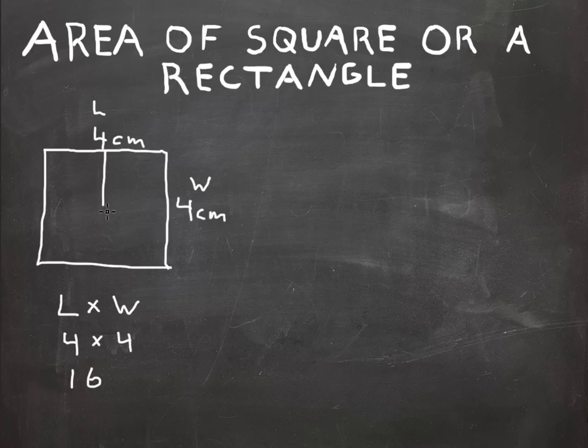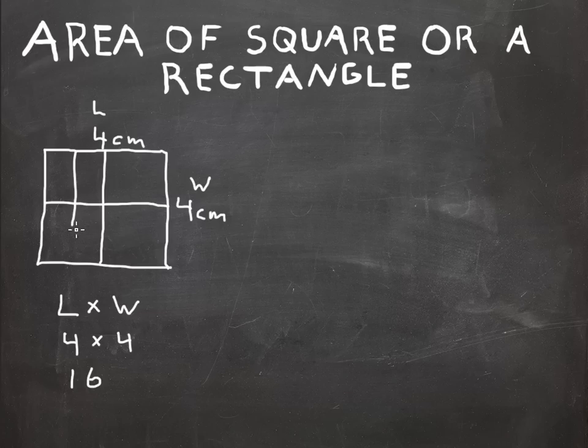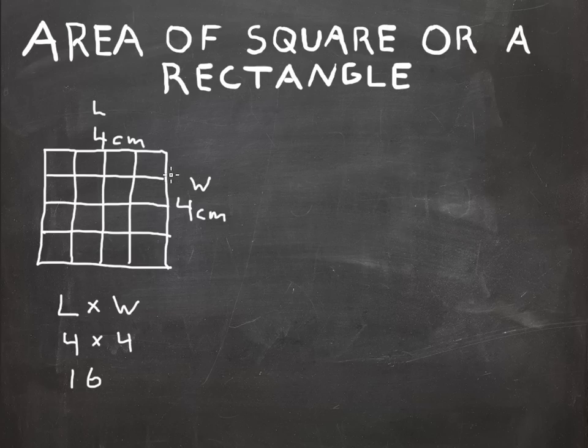We can prove that by dividing the box into a 4 by 4 grid. You can actually count them: there's 4, 8, 12, and 16.